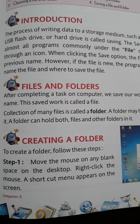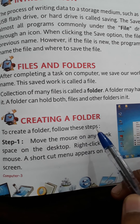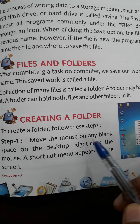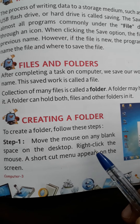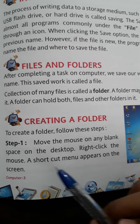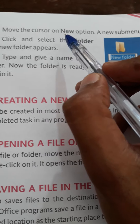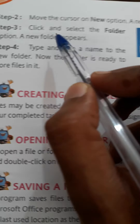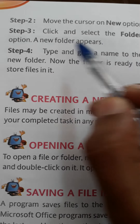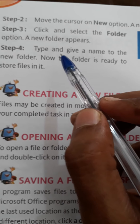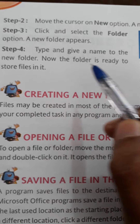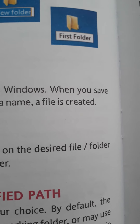Creating a folder. To create a folder, follow these steps. Step 1: move the mouse to any blank space on the desktop and right-click the mouse. A shortcut menu appears like this. Move the cursor on the new option and a new submenu appears. Click and select the folder option. A new folder appears like this. Type and give a name to the new folder. Now the folder is ready to store files in it. After creating a folder it will look like this.